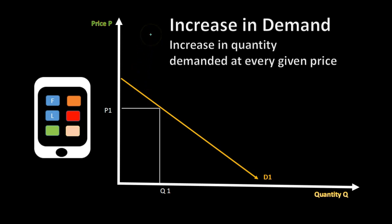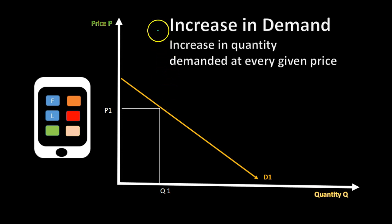We're going to talk about an increase in demand. An increase in demand means something other than price is having an impact on the change in demand, as opposed to an increase in the quantity demanded, which means there's going to be a change along the demand curve. It's a subtle difference in language but a big difference in concept. If someone says there's an increase in demand, we're talking about a shift in the demand curve, whereas an increase in quantity demanded means moving along the curve. A shift means something other than price has affected it.